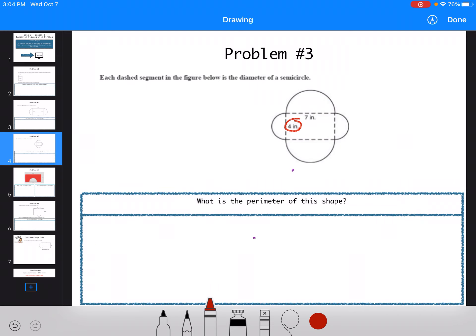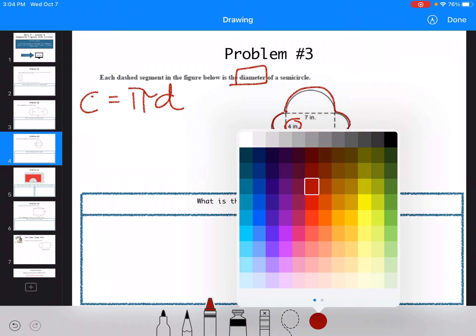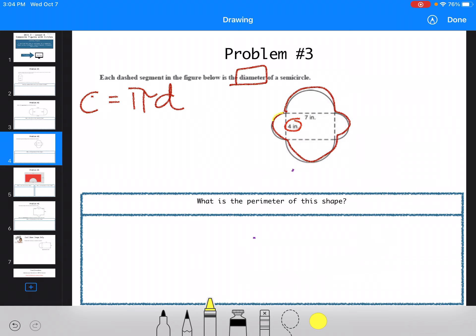The next one is asking me to find the perimeter. Well remember the perimeter is just going to be the outside. So I'm actually looking for the circumference of two different circles. And they're giving me the diameter. So I have C equals pi times D. And then I'm going to do the other circle. I'm going to mark that in yellow. C equals pi times D.